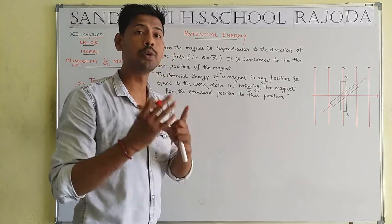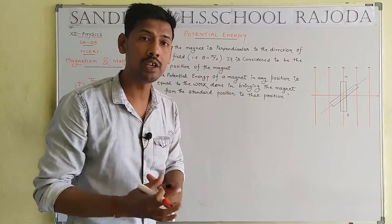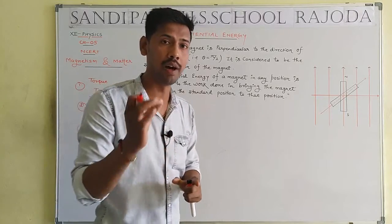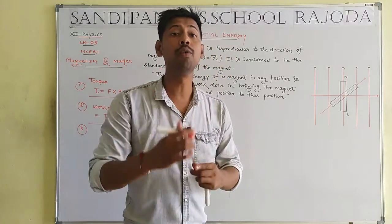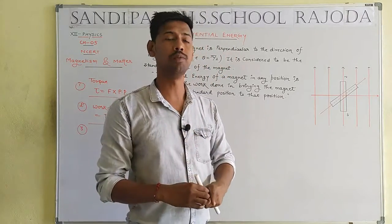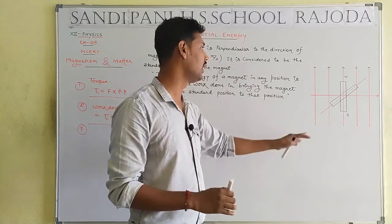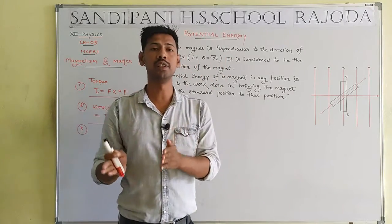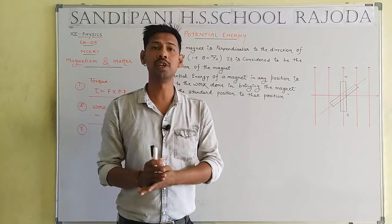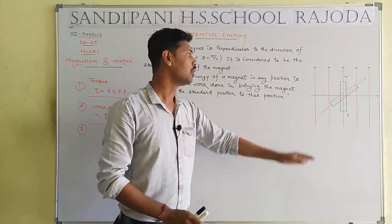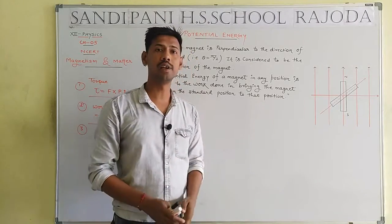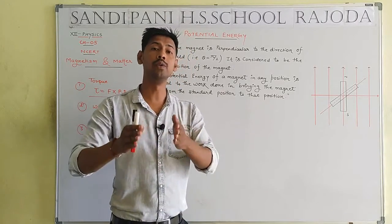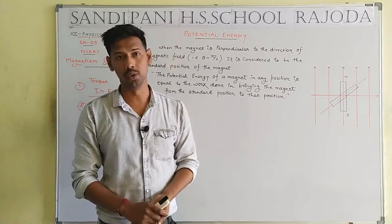Here we are talking about potential energy for a bar magnet in a uniform magnetic field. Students, first clearly understand - potential energy in Class 12 will be asked due to torque, due to work done, and due to uniform magnetic field.